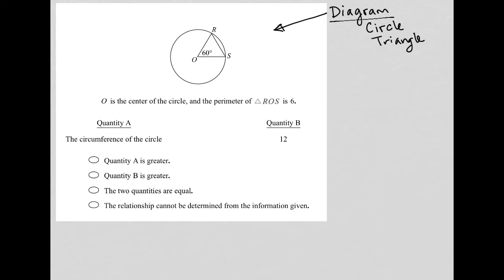So we're told here that O is the center of the circle, so that's the center, and the perimeter of triangle ROS is 6, so P equals 6. So we know that perimeter just means the sum of all of these sides added up: OR, RS, and OS. We add those all up.